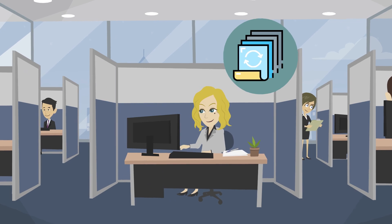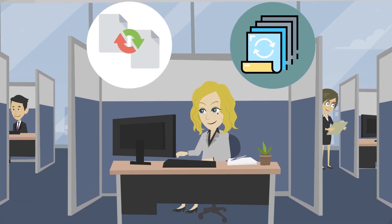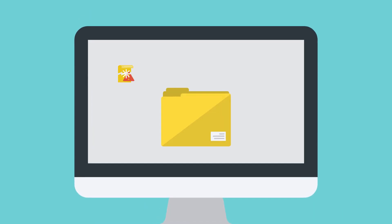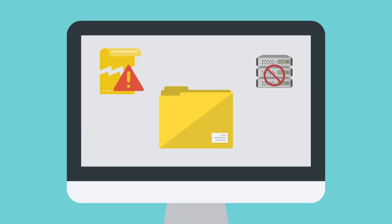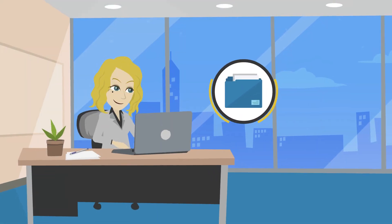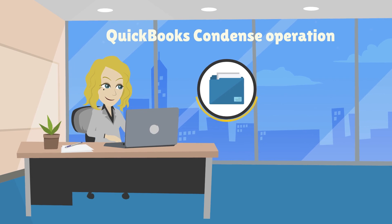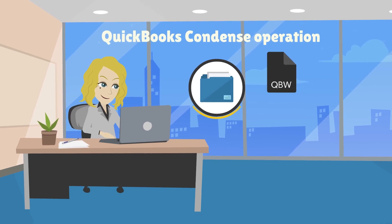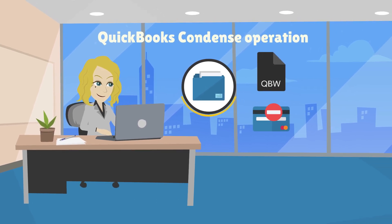Regularly backing up your QuickBooks company file will ensure that you can restore your data quickly in case of corruption. A large company file is prone to becoming corrupt and may result in data damage. To shrink a file, a new company file can be created, the QuickBooks condense operation could be used, or truncating the QBW file by removing transactions for a specified period.